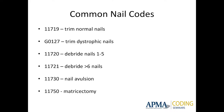So I'm debriding thickened dystrophic mycotic nails, reducing the bulk and thickness. 11721 says I'm debriding six nails. With Medicare guidelines, those nails have to be symptomatic too — meaning they're causing symptoms to the patient: they hurt, they're secondarily infected, they're causing painful ambulation. It's not that common to have a single patient with six mycotic symptomatic nails. Typically two is pretty common (both big toes), four is not uncommon, but six is a little unusual.